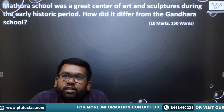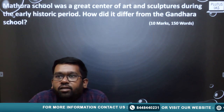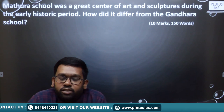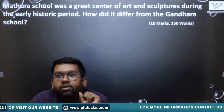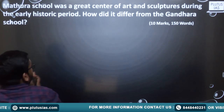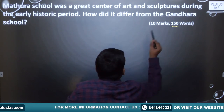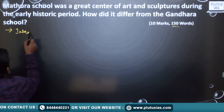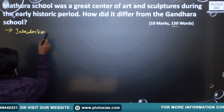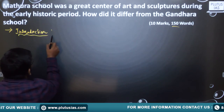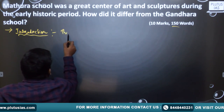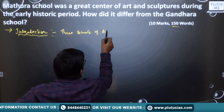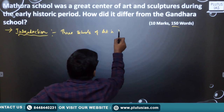The question says: Mathura school was a great center of art and culture during the early historic period. How did it differ from the Gandhara school? In answering this question, since the word limit is 150 words only, we should write an introduction, mentioning the three schools of art in the post-Mauryan period.